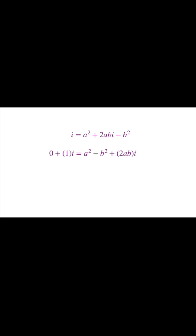So on the left, we can write i is 0 plus 1 times i, and let's rearrange the terms on the right, so the real part of the complex number on the left must be 0, and on the right must be a squared minus b squared, and the imaginary part on the left must be 1, and on the right must be 2ab.